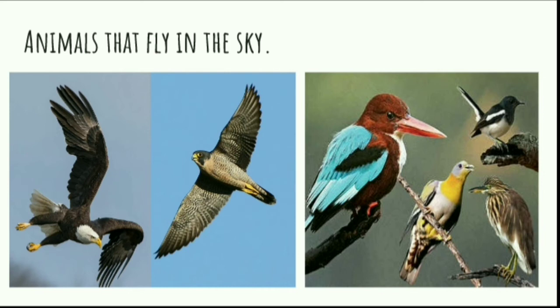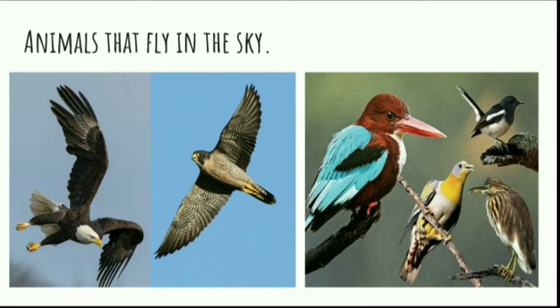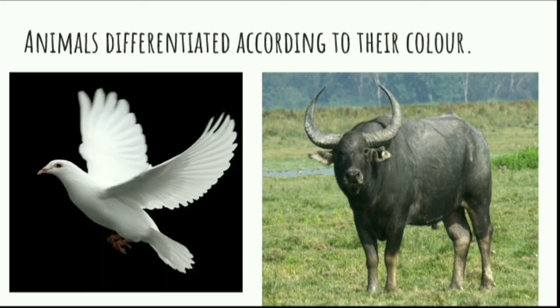Some animals fly in the sky. They use their wings to fly in the sky. Some animals you can find inside the water — they use their gills to breathe and fins to move and swim inside the water.